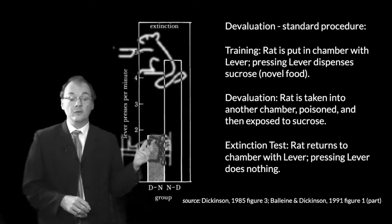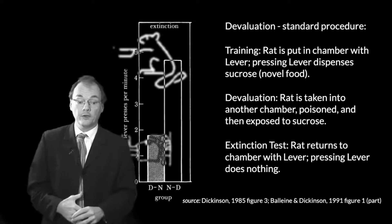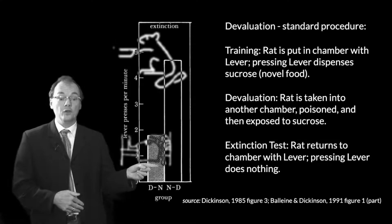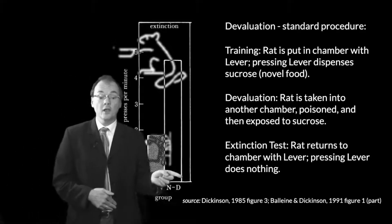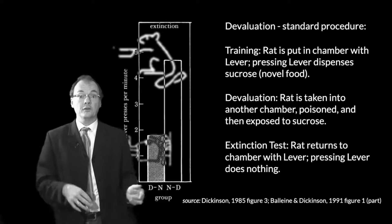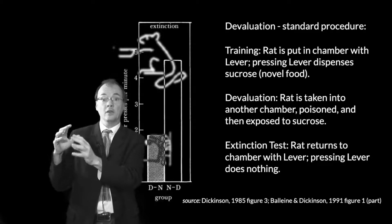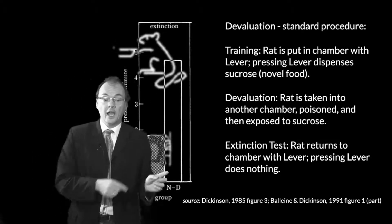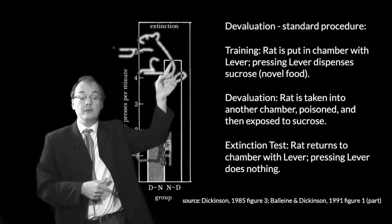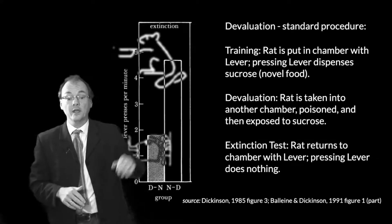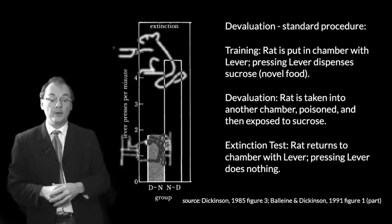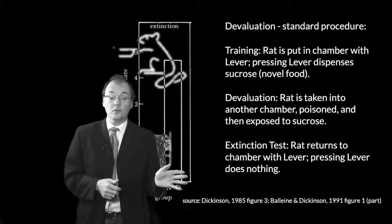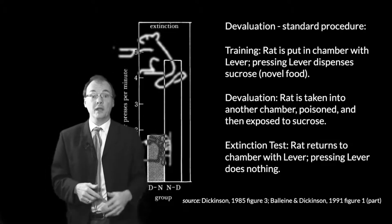Here are the kind of results which are absolutely typical of this devaluation paradigm — it's a very standard thing, been done hundreds and hundreds of times. We compare the frequency with which a rat that has had its papaya devalued presses the lever versus a rat that had a different food devalued — say, a delicious blue cheese, a stilton. That rat was really enjoying the stilton, then it was poisoned and became averse to the stilton. When it goes back into the chamber where the papaya is, this rat is pressing the lever quite frantically — a bit more than twice as often as the rat which has had the papaya devalued. Makes perfect sense: papaya devalued, not really pressing the lever very much — smart rat. Stilton devalued, still likes papaya, pressing away.